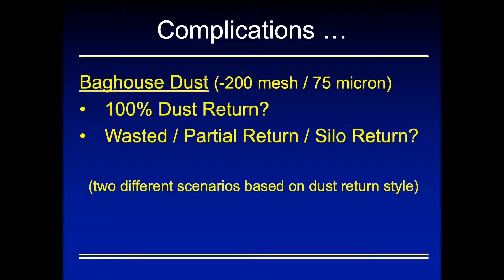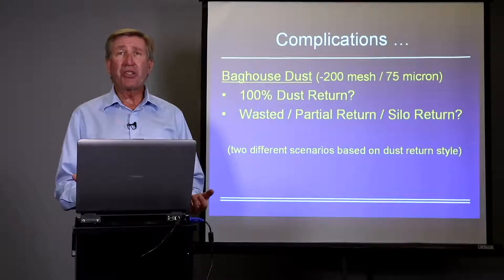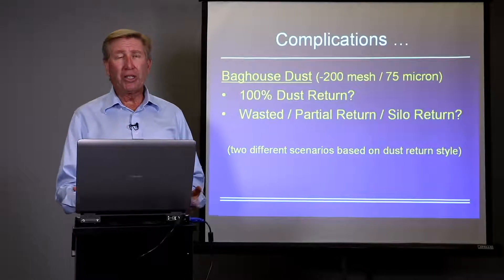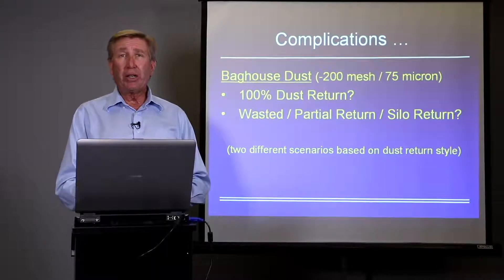Let's talk about baghouse dust — the minus-200 mesh or 75-micron material. You've got to ask: are you using 100% of your dust back in the mix, or are you doing a partial return or running all baghouse dust through a silo? Most of us produce mixes with 100% dust return. If you've set up your cold feeds, established your JMF, and accounted for breakdown inside the dryer, you'll put 100% dust back in. Otherwise, you're either going to waste it, use part of it, or run it into a silo and put back what you want.